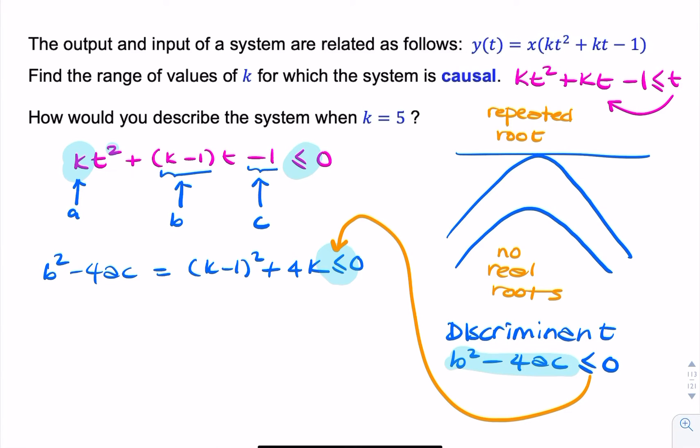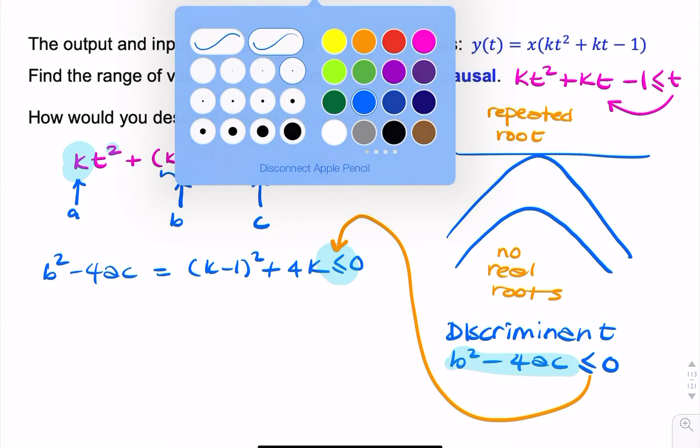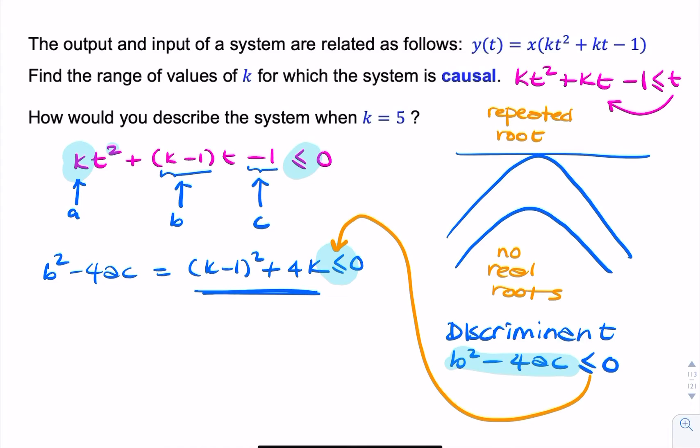We now have a new expression to solve, which is also a quadratic. If we open the brackets and collect like terms, we have a quadratic in k that's less than or equal to 0, and we can solve that.